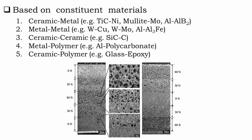Based on the constituent material, there are primarily five types of FGMs. First, ceramic-metal — an example of this type is mullite and molybdenum FGM, and aluminium and aluminium diboride FGM. The second type is metal-metal FGMs; some examples are tungsten-copper FGM and tungsten-molybdenum FGM. The third type is ceramic-ceramic — an example is silicon carbide with diamond-like carbon. The fourth type is metal-polymer — an example is aluminium-polycarbonate. And the fifth type is ceramic-polymer — an example is glass-epoxy FGM.